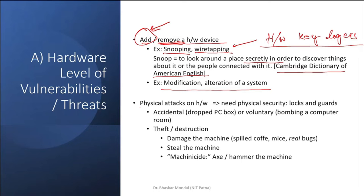Physical attacks on hardware require physical security, but most of the time when we discuss information security, we overlook the need for physical security. Most organizations neglect access to server rooms and network devices. In offices and buildings there are open RJ-45 ports, and those network ports can be used to launch attacks from inside the premises.